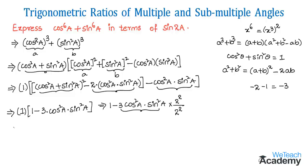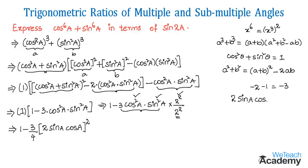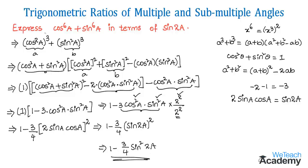By multiplying and dividing by 2 squared (which is 4), we get 1 minus 3 over 4 into (2·sinacosa)². We recognize that 2sinacosa is the double angle formula equal to sin2a. Substituting, we get 1 minus 3/4·sin²2a. Hence we have expressed cos⁶a + sin⁶a in terms of sin2a.